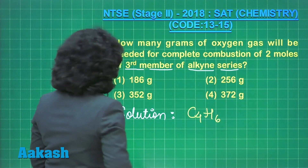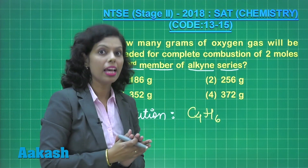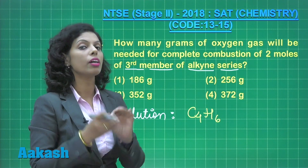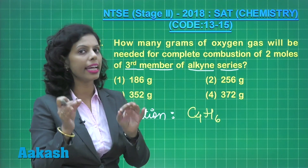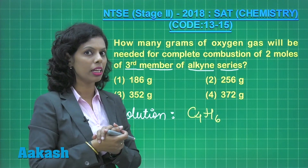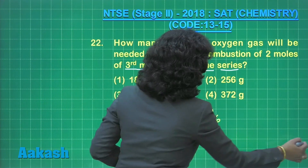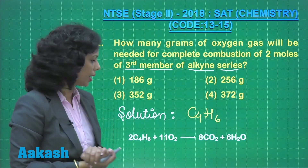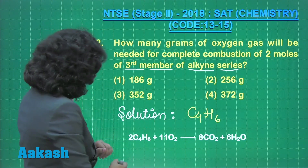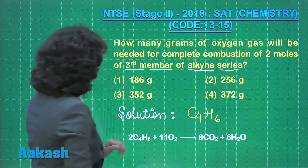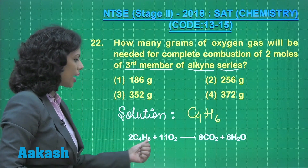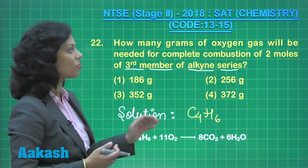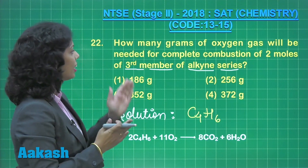When butyne undergoes combustion, carbon dioxide, water, and energy are released. From the balanced chemical equation for the combustion of butyne, two moles of butyne require 11 moles of oxygen gas.